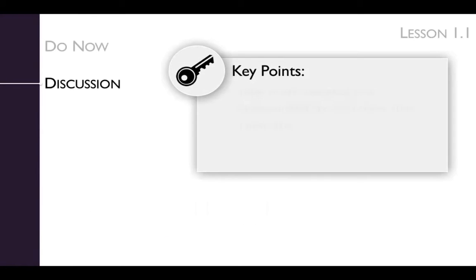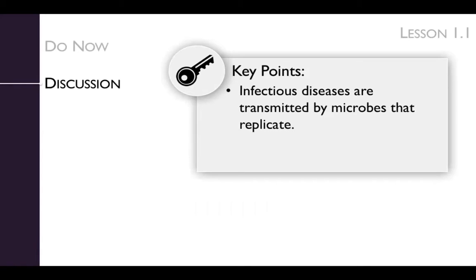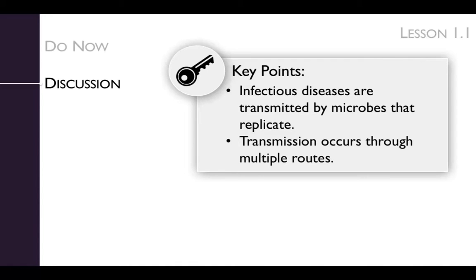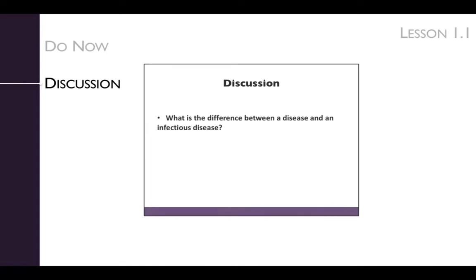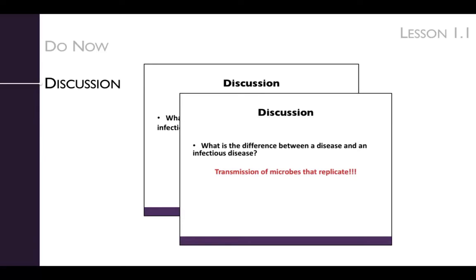The key points of the lesson's discussion are that infectious diseases are transmitted by microbes that replicate, and transmission occurs through multiple routes. We'll get there with the Socratic discussion. The discussion centers around the question: what is the difference between a disease and an infectious disease? The main distinction is that infectious diseases are transmittable. Transmission might occur when microbes are passed from human to human, from another animal or insect to a human, or even from an environmental source to a human. The transmission of the microbes then leads to disease.